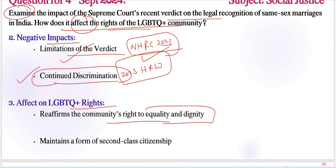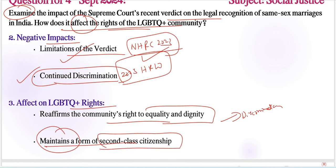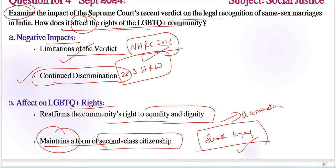On one hand, it reaffirms the community's right to equality and dignity, reinforcing constitutional protections against discrimination. On the other hand, the lack of legal recognition for same-sex marriages perpetuates a form of second-class citizenship. This duality is evident in the Saurabh Kirpal case — a senior advocate whose appointment as a judge was reportedly delayed due to his sexual orientation, highlighting the systematic barriers that remain.